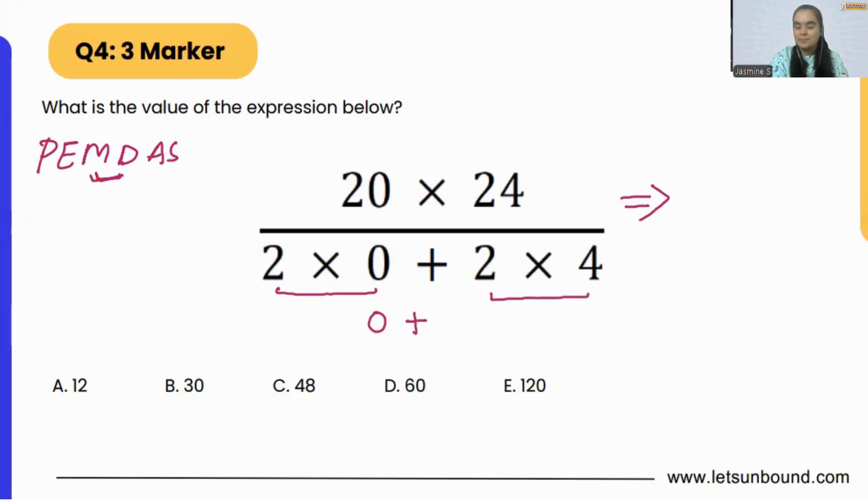Two times zero is zero, we know that. It's pretty simple. And two times four is eight, so basically zero plus eight is eight. We got our denominator.